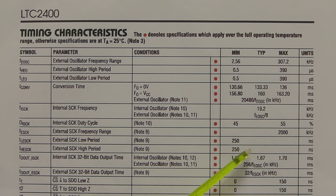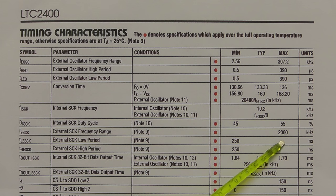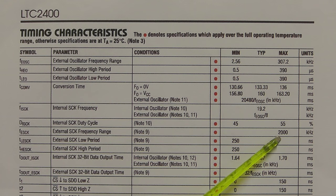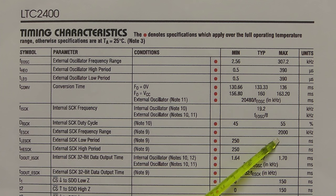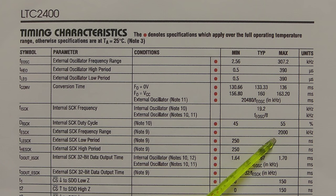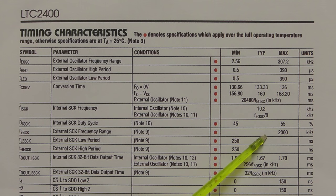The Arduino is running at 16 megahertz, and as you can see here the maximum allowed clock frequency is 2,000 kilohertz — which is 2 megahertz. So we're going to have to divide down the 16 megahertz clock frequency of the Arduino to at least 2 megahertz so it functions correctly. I'm going to set it initially at 1 megahertz, so well within its specification.